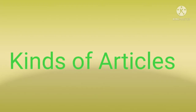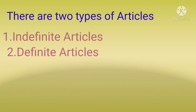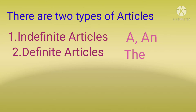So next is kinds of articles. There are two kinds of articles. First is indefinite article. Second one is definite article. A and an — these are called indefinite articles. And 'the' is called the definite article.